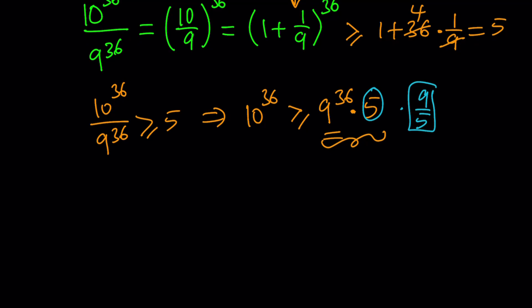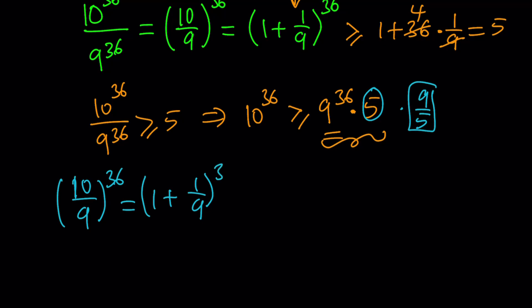Here's what we're going to do. We'll again use (10/9)^36, but with a trick: write it as (1 + 1/9)^9, all to the power 4. By the power of a power rule, we multiply the exponents — 9 times 4 is 36 — so this works.